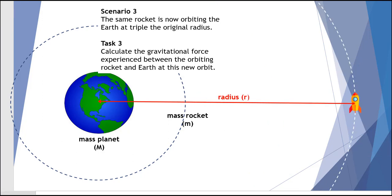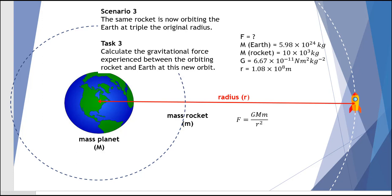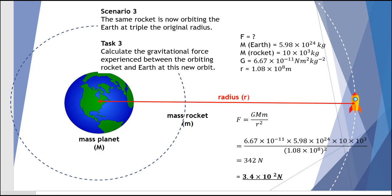Moving on to our third scenario — we've now got triple the radius for exactly the same rocket. We want to calculate the gravitational force at this new altitude. Our new radius is three times the original. Go ahead and calculate this. Remembering to square the radius — a common mistake by many students — you'll end up with an answer of 342 newtons, or 3.4 × 10² newtons to two significant figures.